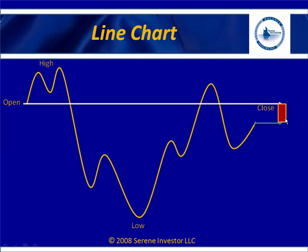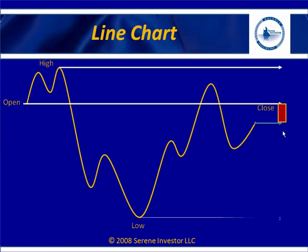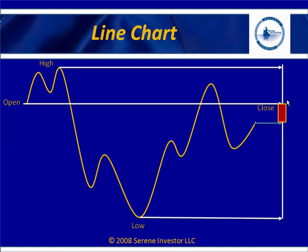Depending on the charting software you use, it could be black or white. Basically, a filled-in candle is bearish. Now we plot the other two points — the high and the low — and that gives us our wick, the candlestick wick. We can see the battle happen today from this high to this low. The range is important, but the open and the close are most important. It closed lower but not a lot lower than it opened, so I'd call this pretty much a neutral day.